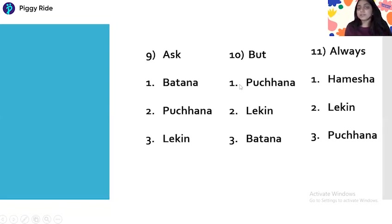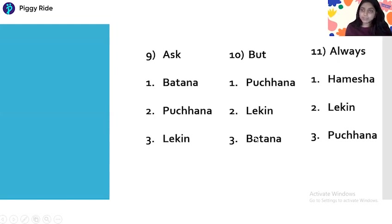Number ten is 'But.' Options are: number one Pochna, number two Lakin, number three Batana. Tell me the right one. But means Lakin. But means Lakin.